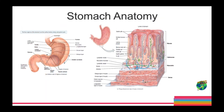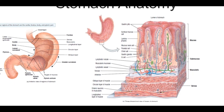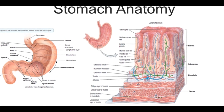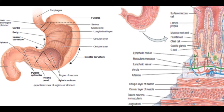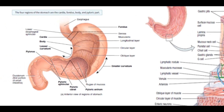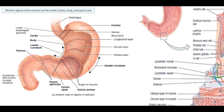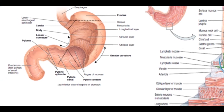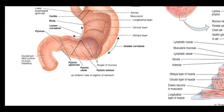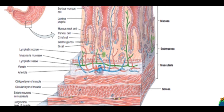Before we learn about Peptic Ulcer, we need to know about the stomach, the intestine and the esophagus because Peptic Ulcer mainly affects these organs. The stomach starts from the cardia and leads to the fundus where food substances are stored, then to the body, then into the pyloric antrum, through the pyloric canal, it leads to the pylorus. The wall of the stomach is divided into mucosa, submucosa, muscularis and serosa.